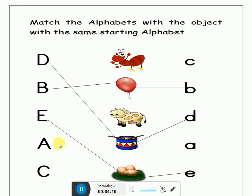Now look at this letter. Which letter is this? This is letter A. And where is the object of letter A? Ant. Very good. Let's match ant with A. Well done.